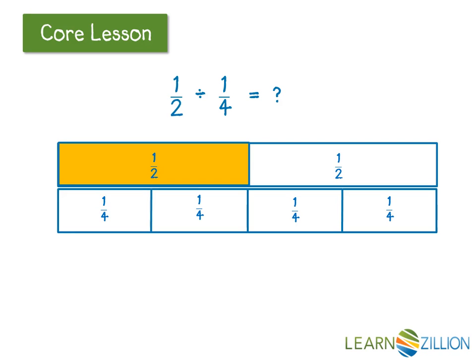Next, since I will be dividing by 1 fourth, you will notice I have divided the second whole rectangle into 4 equal parts. The question that I want to answer is, how many 1 fourths are there in 1 half? From this rectangular model, I can see that exactly 2 fourths are equivalent to 1 half. So 1 half divided by 1 fourth is 2.